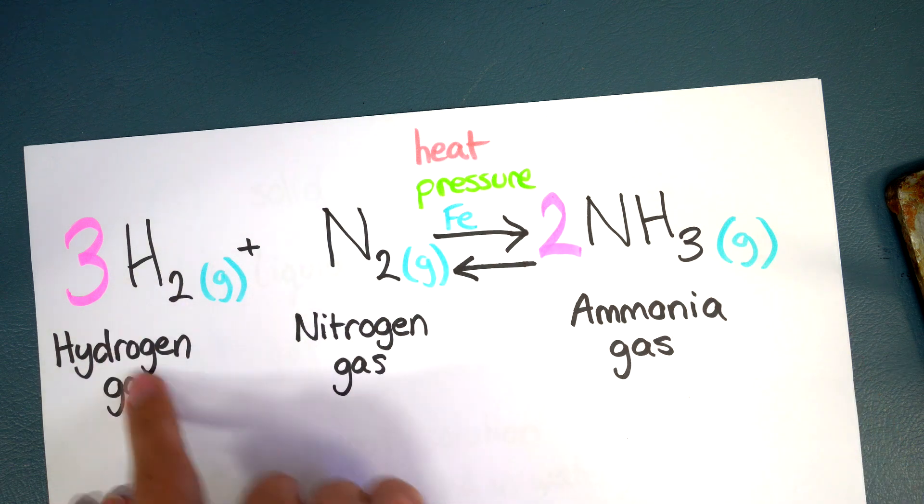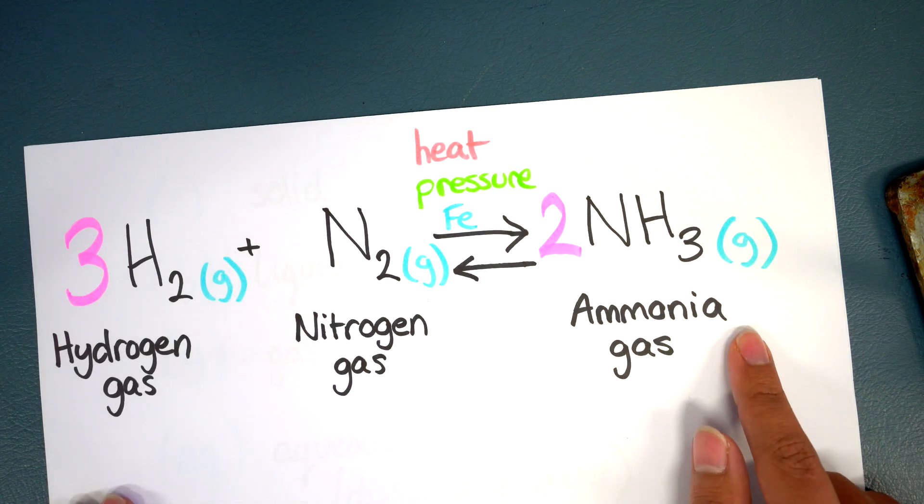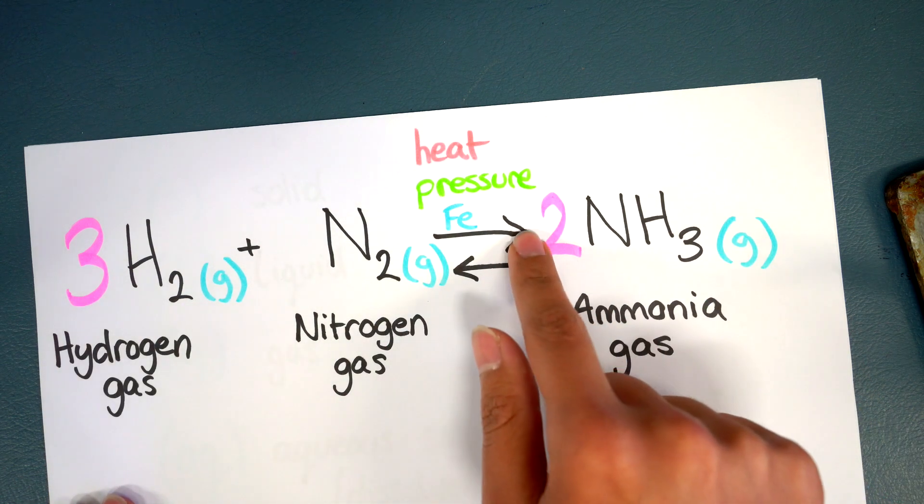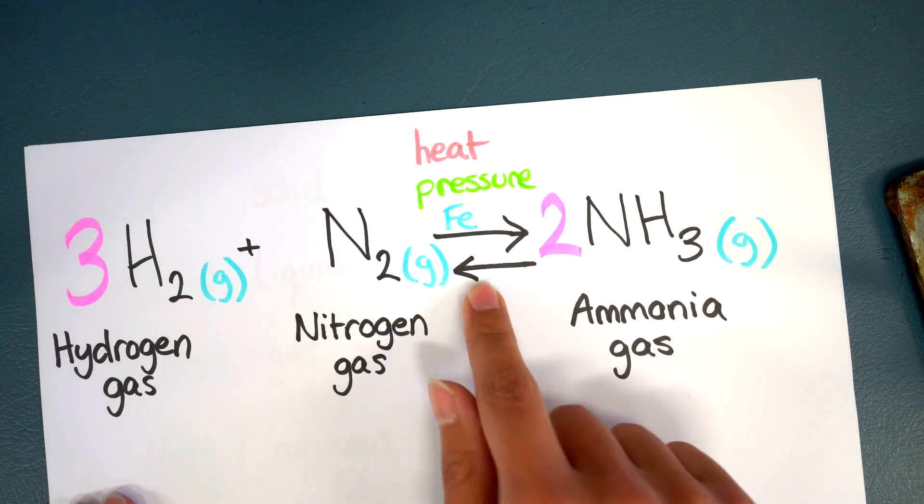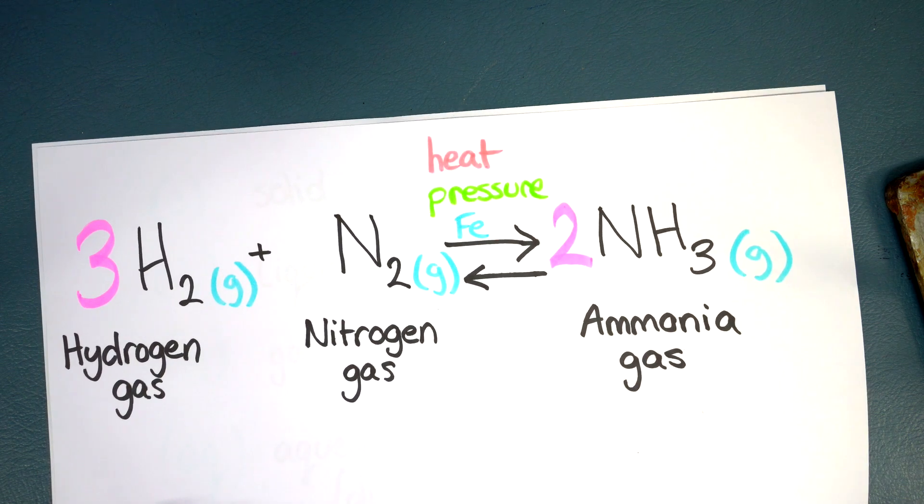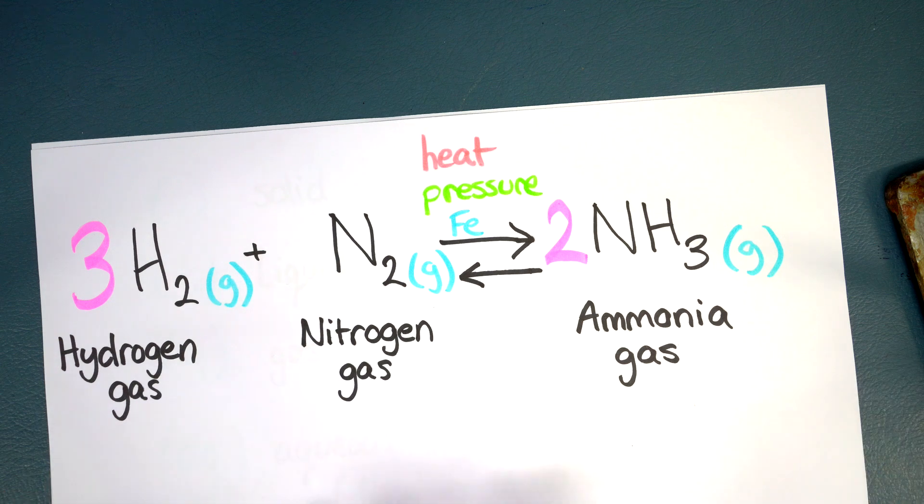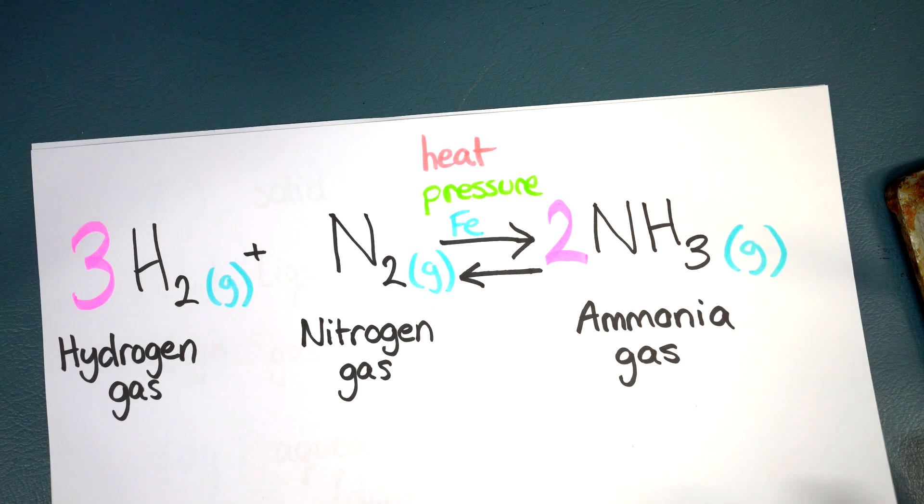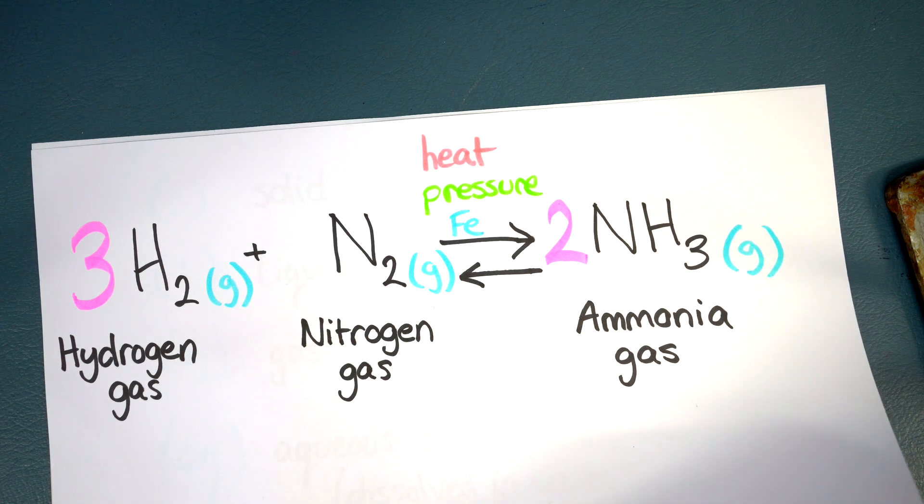This chemical reaction, this chemical equation, sorry, actually has arrows going in both directions and that's called an equilibrium or reversible reaction and that's something much more complicated. We're not going to look at what that is or what that does until you get to year 11 chemistry.